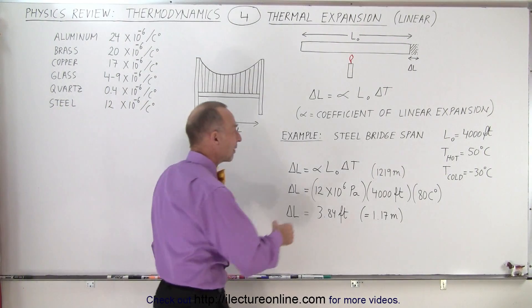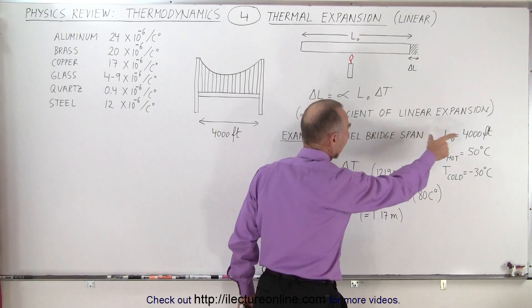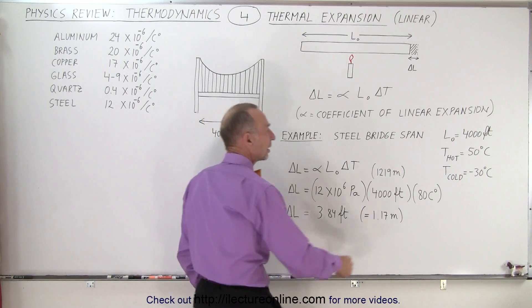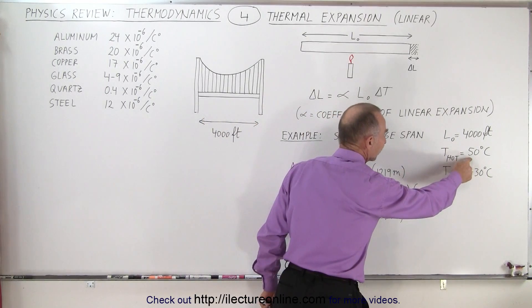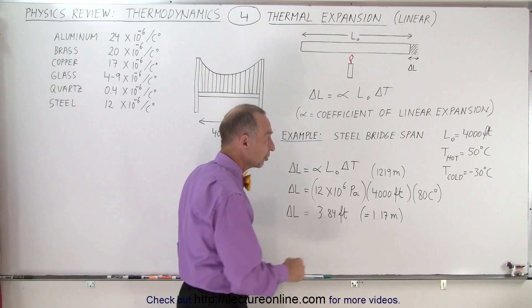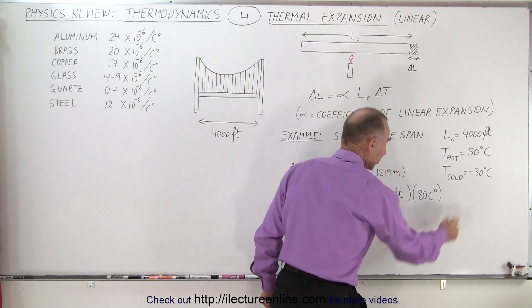As an example, let's say we have a steel bridge span that has a length of 4,000 feet which is about 1,219 meters. Let's say that the temperature on a very hot day can be as much as 50 degrees Celsius as the sun shining on the bridge and on a very cold day it can be minus 30 degrees Celsius.